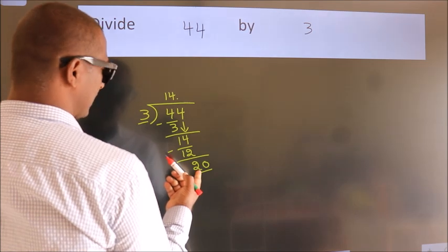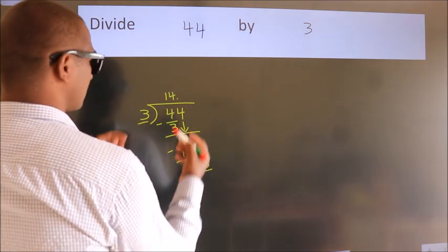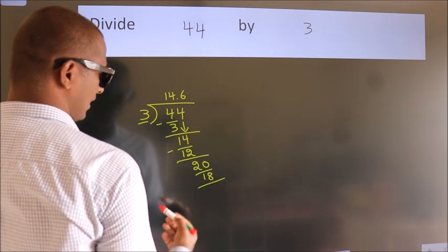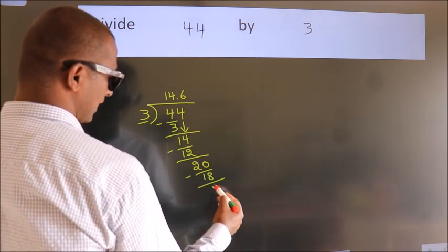A number close to 20 in the 3 table is 3 sixes, 18. Now, we subtract. We get 2.